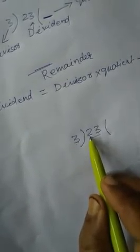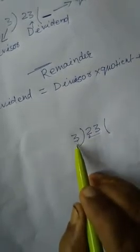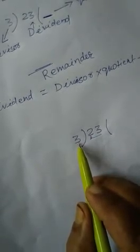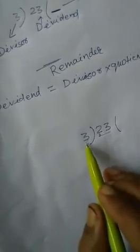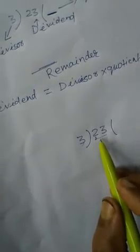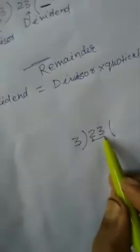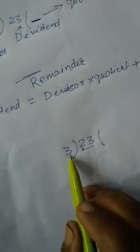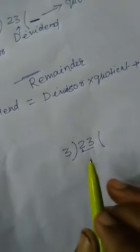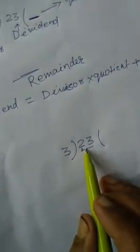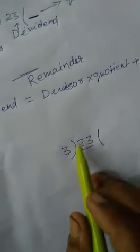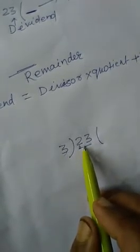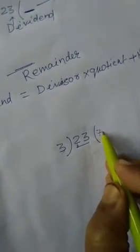Here, if we take one digit it is 2, and 2 cannot be divided by 3 because if we go to the table of 3, even one time its value will be more than 2. So we are free here to take two digits. If in two digits it is not possible to divide by the divisor even one time, then we have to move on to three digits. But here, the two-digit number 23 can be divided by 3 maximum up to 7 times, because 7 threes are 21.